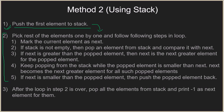We mark the current element as 'next' — whatever element you are processing from the loop is marked as next. We then check if the stack is not empty and pop an element from the stack to compare it with next. In an intermediate situation where you have elements on the stack and a new element 'next', you keep popping elements from the stack and comparing with next. If next is greater than the popped element, that means next is the next greater element for the popped element.